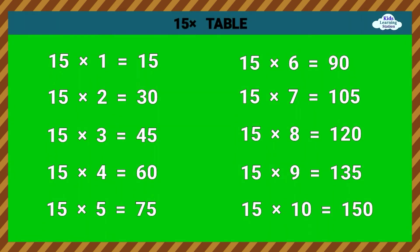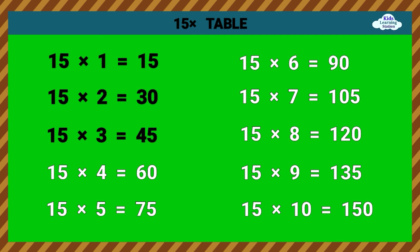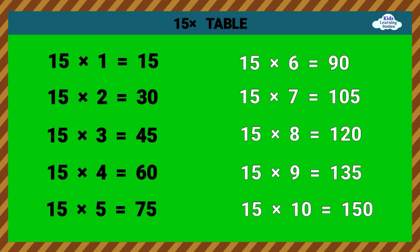Fifteen times table. 15 times 1 equals 15. 15 times 2 equals 30. 15 times 3 equals 45. 15 times 4 equals 60. 15 times 5 equals 75.